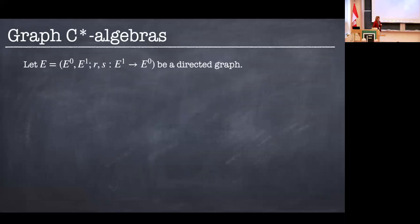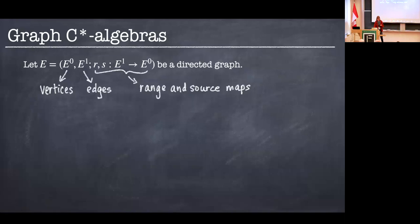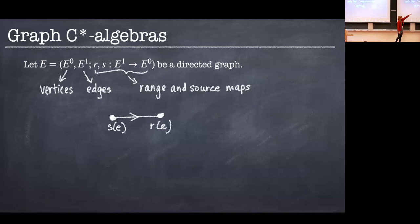So let me first tell you what a graph C-Star Algebra is. So we start with a directed graph, and this contains two sets, E^0 we think of as vertices, E^1 we think of as edges, and these two maps r and s we think of as giving the edges direction. So these are the range and source maps, and you should think of something like this. So if we have an edge, I should have labeled this e, then this is the source, and this is the range. So the arrow points from the source to the range.